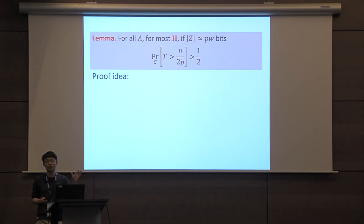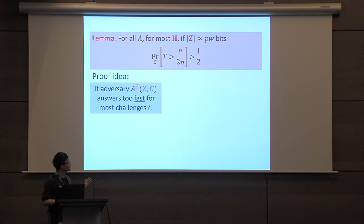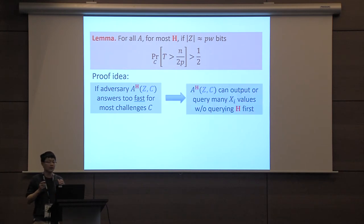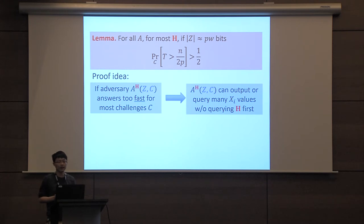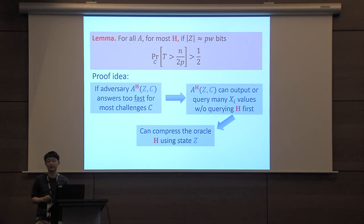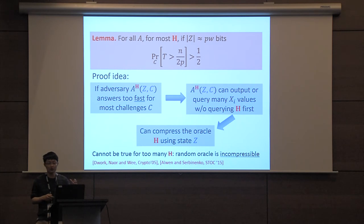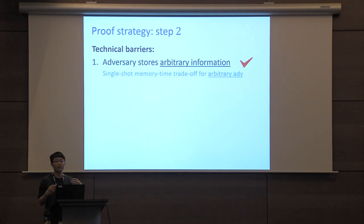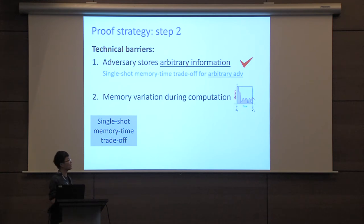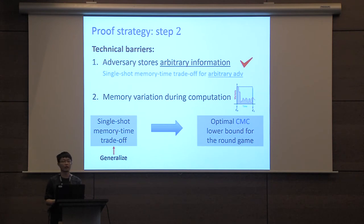In particular, we prove a strong core lemma showing that for all adversaries and most oracles H, if the state size is around p*w bits then the time t is at least n/(2p) with probability half. The proof is highly non-trivial but the high-level idea is proof by contradiction: if time t is small for most c — that is, the adversary answers too fast for most challenges — then the adversary on input z must be able to output or query many x_i values without querying oracle H first. Therefore we can argue this enables compression of the oracle using state z. But this cannot hold for too many H, as a random oracle is incompressible. This solves the first barrier that the adversary may store arbitrary information.